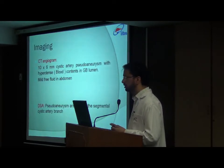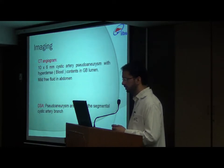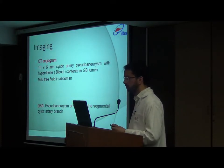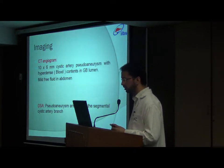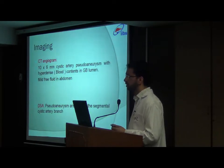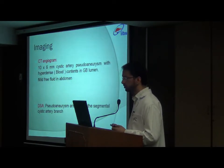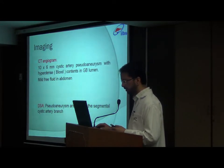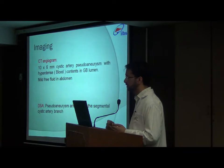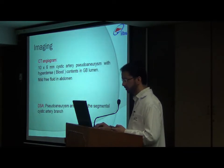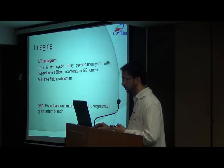An urgent CT angiogram was ordered which showed a 10x6 mm cystic artery pseudoaneurysm with hyperdense contents on non-contrast CT, suggestive of acute hemorrhage. There was also some mild free fluid in the abdomen. The patient was shifted to the vascular lab and digital subtraction angiography was done, which again confirmed the pseudoaneurysm arising from a cystic segmental branch of the cystic artery.